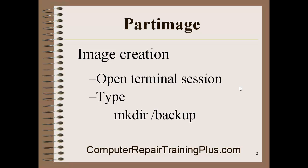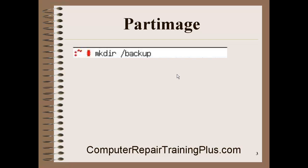The first command we want to type in is: mkdir space forward slash backup. This will create a backup directory. It's going to be in RAM because it's going to be part of the Linux environment, but we're going to use this backup directory as a pointer — as a substitute — for putting our images onto the hard drive. Here you see the mkdir /backup command in the terminal session. Just press Enter and it will take that command.